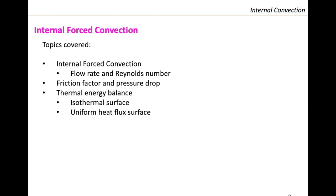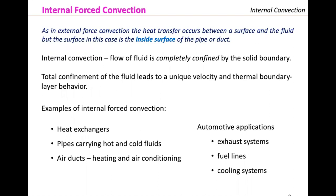Then we will evaluate the thermal energy balance and go in detail through two cases of internal convection: the isothermal surface and the uniform heat flux surface. In internal force convection we force the fluid — typically with a pump — and heat transfer occurs between a surface and the fluid, but here the surface is the inside surface of a pipe or duct. The flow is completely confined in a solid boundary, which leads to a unique velocity and thermal boundary layer behavior.